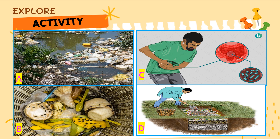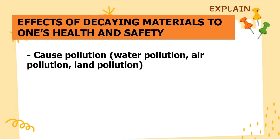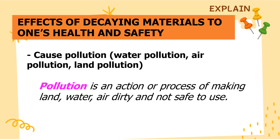Write your answers on your notebook. Now let's see if your observations are the same. If we dispose of decaying materials improperly, here are the possible effects on one's health and safety. It can cause pollution, whether it is water pollution, air pollution, or land pollution. When we say pollution, it is an action or process of making land, water, and air dirty and not safe for use.